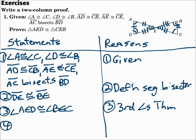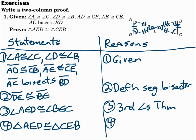The goal is to prove the triangles congruent. Now, since I have all three pairs of sides congruent and all three pairs of angles congruent, I can say that the triangles are congruent. Triangle AED is congruent to triangle CEB — why? Because all three pairs of sides are congruent and all three pairs of angles are congruent, and that's the definition of congruent polygons.